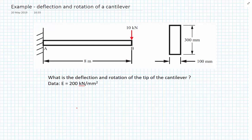In this video, we're going to use the virtual work equation to calculate the deflection and rotation of a cantilever. We're given a cantilever beam that is 8 meters long, subject to a 10 kilonewton point load at its tip, position B, and we're given the dimensions of the cantilever. We're not directly given the I value.